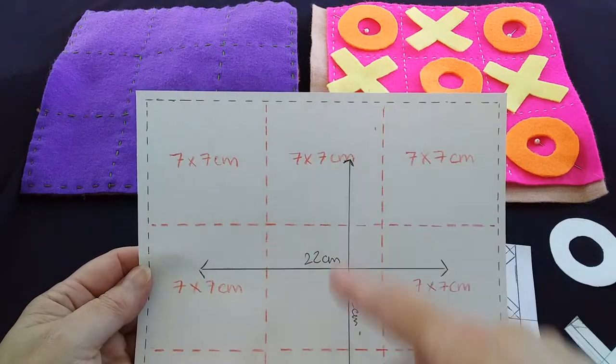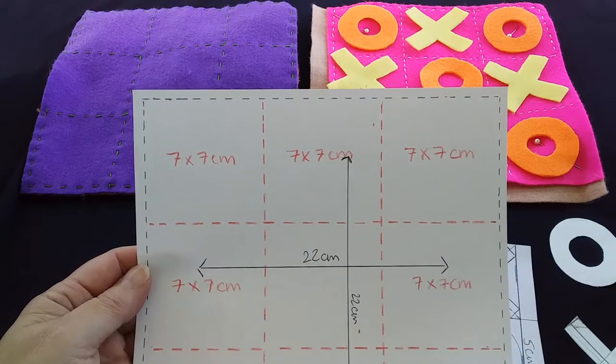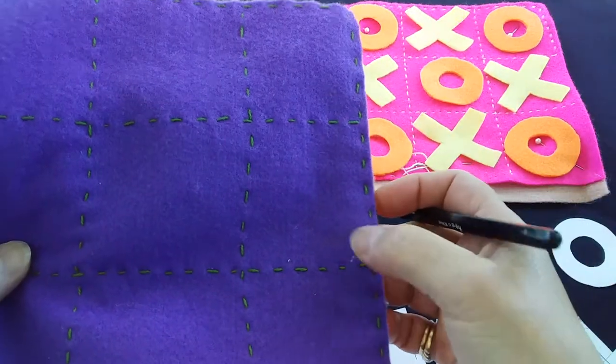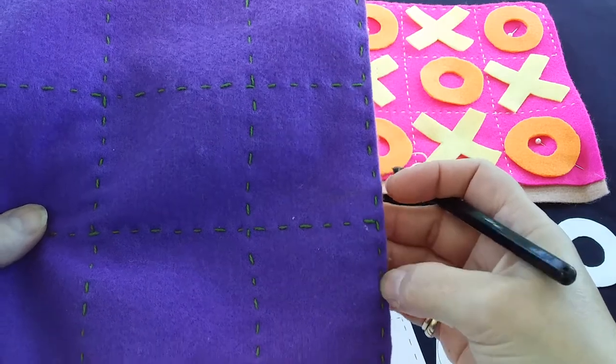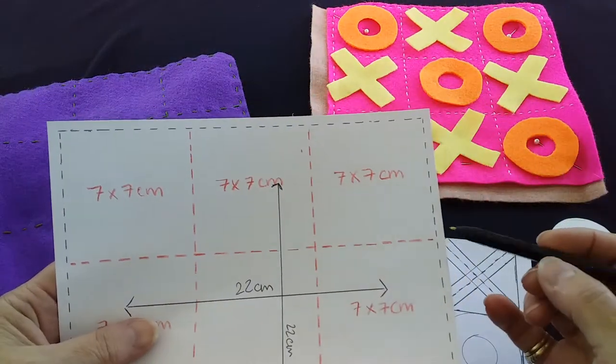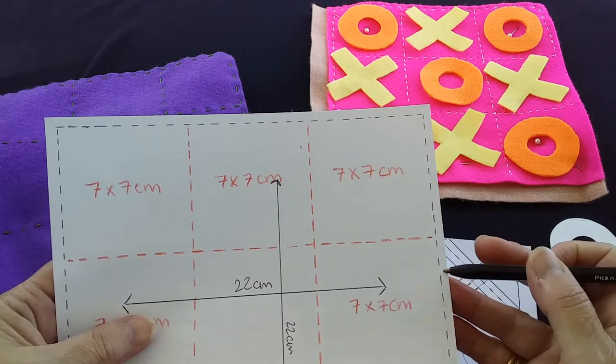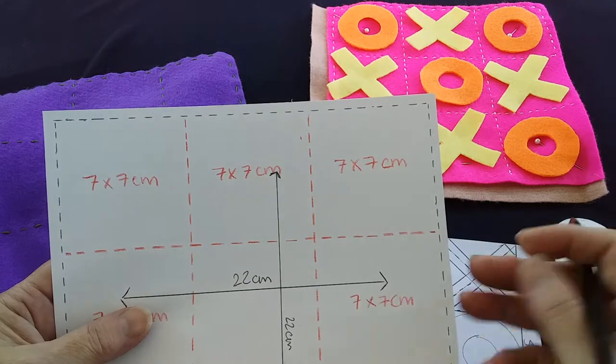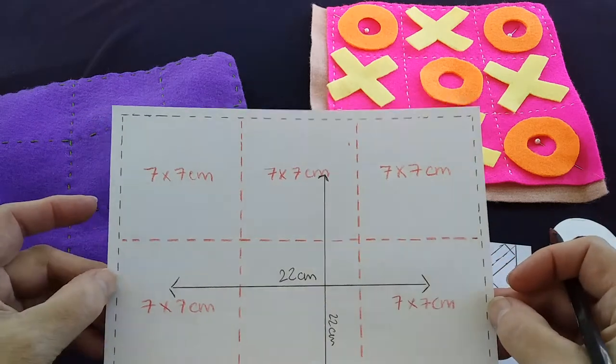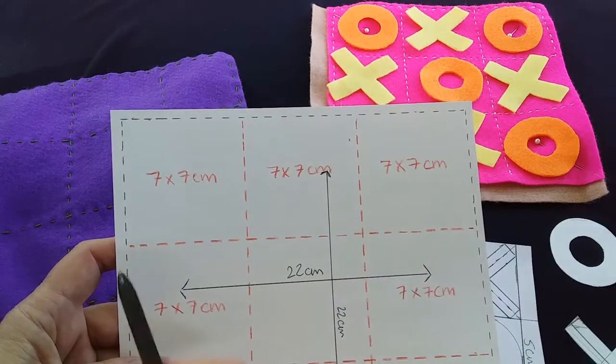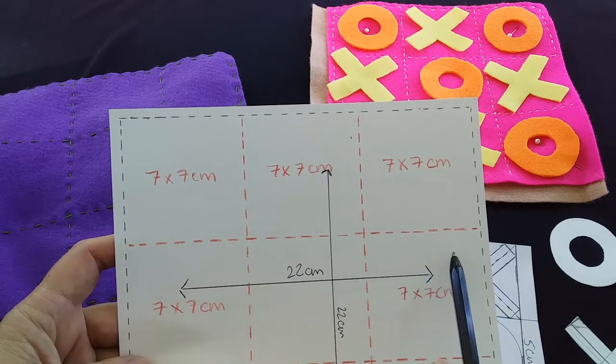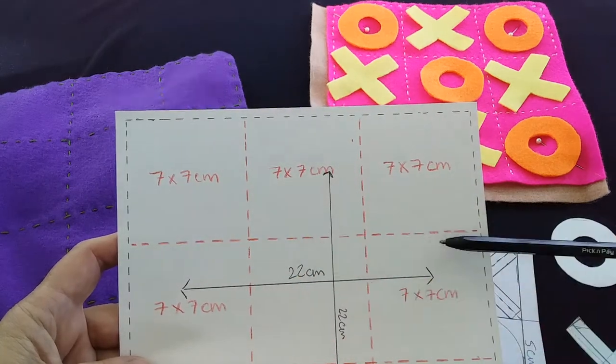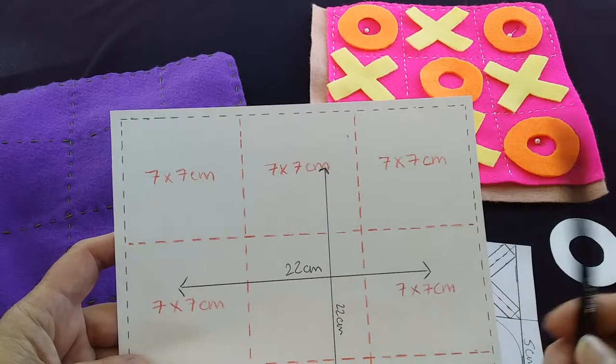The stitching that goes around the outside edge here to join the two pieces together, you're going to do half a centimeter in from the edge. So your 22 centimeters is going to be reduced by half a centimeter on either side, so your centerpiece will be 21 centimeters. Then you're just going to divide that by three, which will give you seven centimeters, and you're going to do a grid so you'll have nine squares that are seven centimeters by seven centimeters.